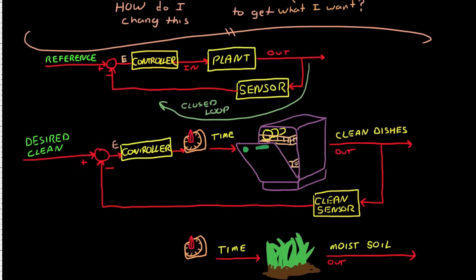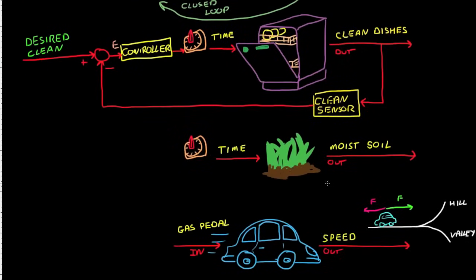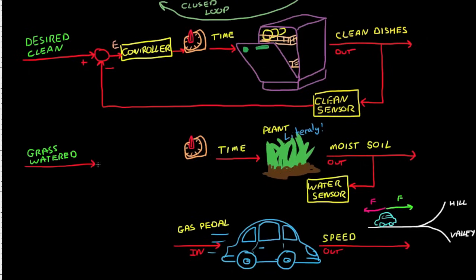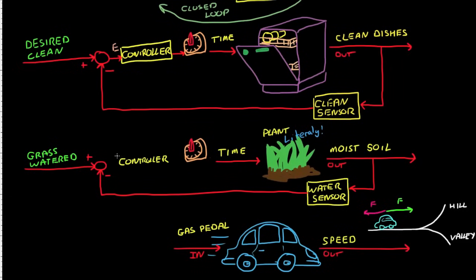A sprinkler system could also benefit from closed loop control. The sensor could be a device planted in the soil that measures the moisture content of the plant. Remember that in this case the plant is both the grass and the soil. The reference signal would be a desired soil moisture content. And again, the error signal would be generated, which would then be fed through a controller, and the controller would adjust the amount of time that the sprinklers ran. The sprinklers would then run until the moisture level reached a specified value and then they would be shut off.